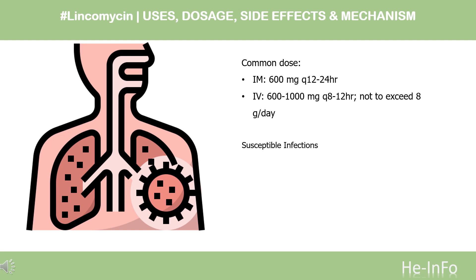Dose: The dose of this medicine will be different for different patients. For susceptible infections, IM: 600 mg every 12–24 hours; IV: 600–1000 mg every 8–12 hours, not to exceed 8 g per day. For severe renal impairment, use 25–30% of the usual dose.